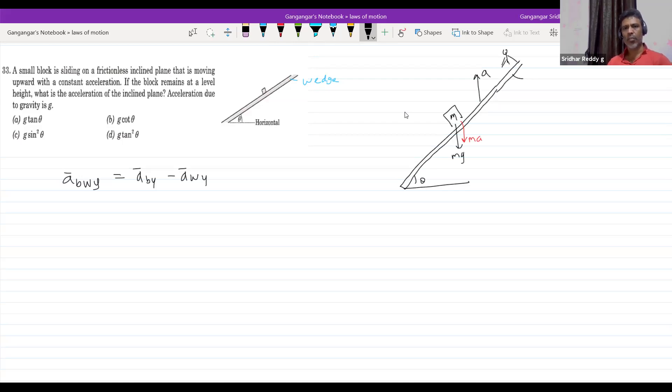We will put a pseudo force also downward like this, so you resolve all this. This will be how much? The total resultant force will be mg plus a sine theta.